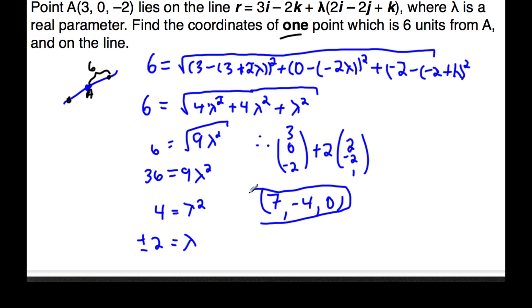If I wanted the other point, which is also for full marks, I would put in negative 2. So that will always work whenever you have a distance on a line. You can plug it through here.